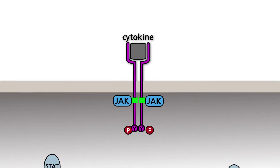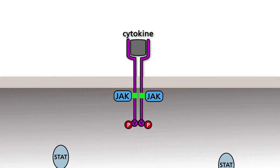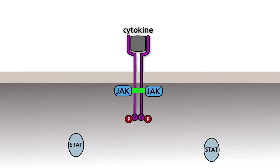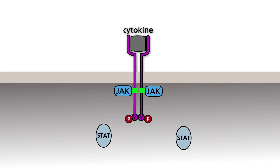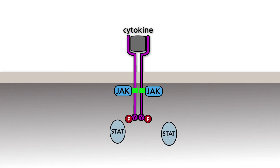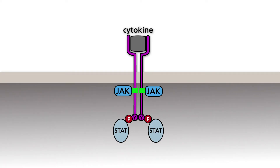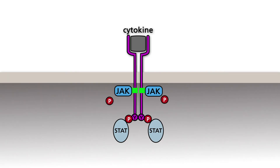STAT proteins, named for their primary properties as signal transducers and activators of transcription, carry SH2 domains and are thus able to bind to the phosphorylated tyrosine residue of the receptor. As they are then located close to the JAKs, the STATs can also be phosphorylated. Phosphorylated STAT proteins dissociate from the receptor and dimerize via their SH2 domains.